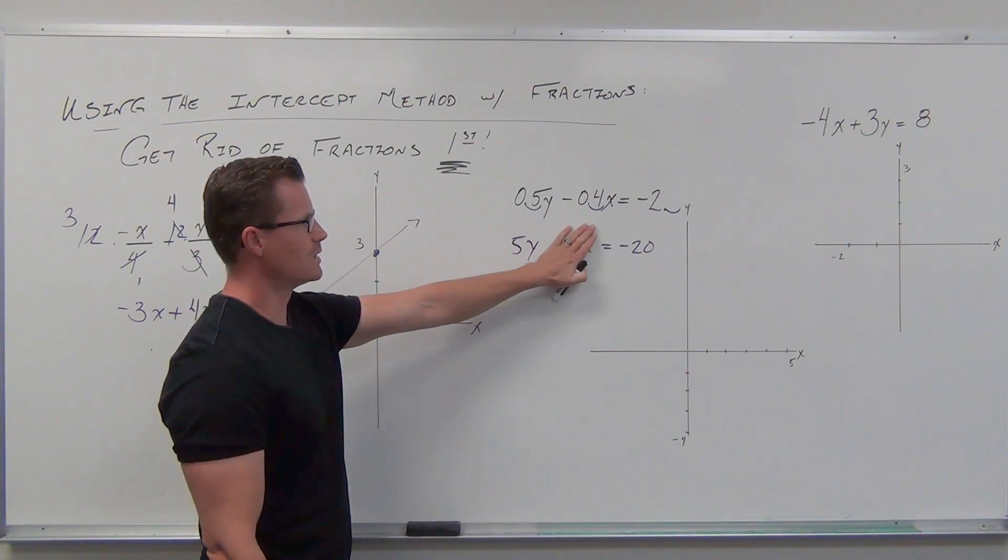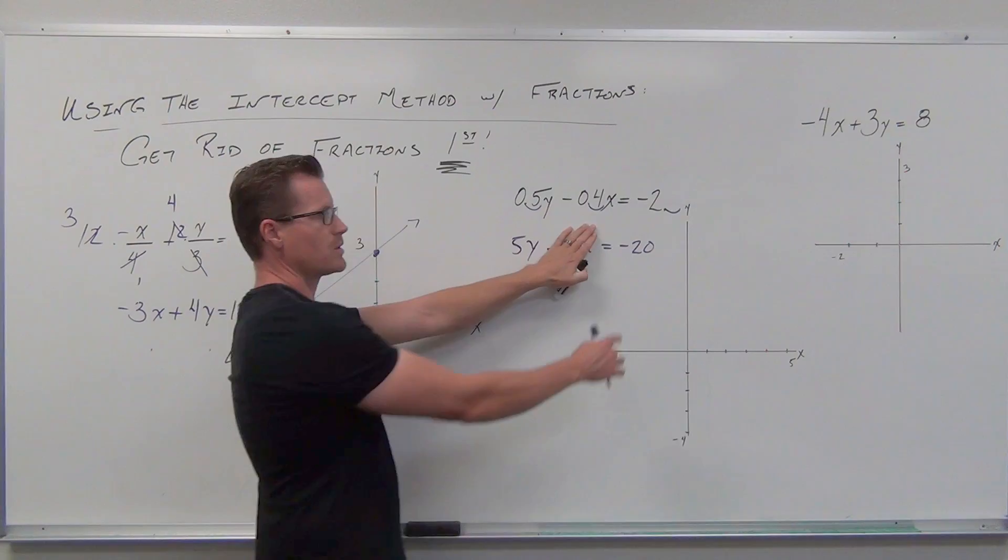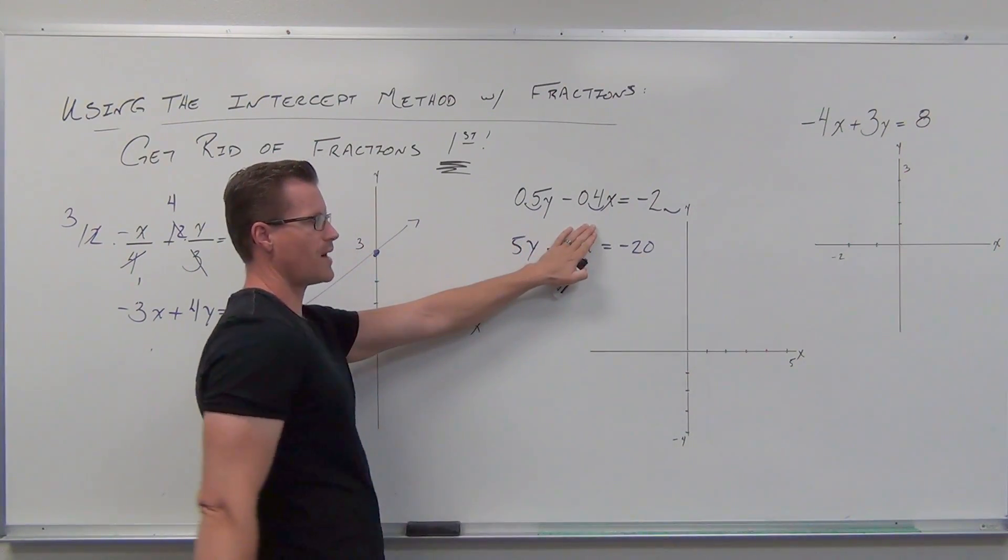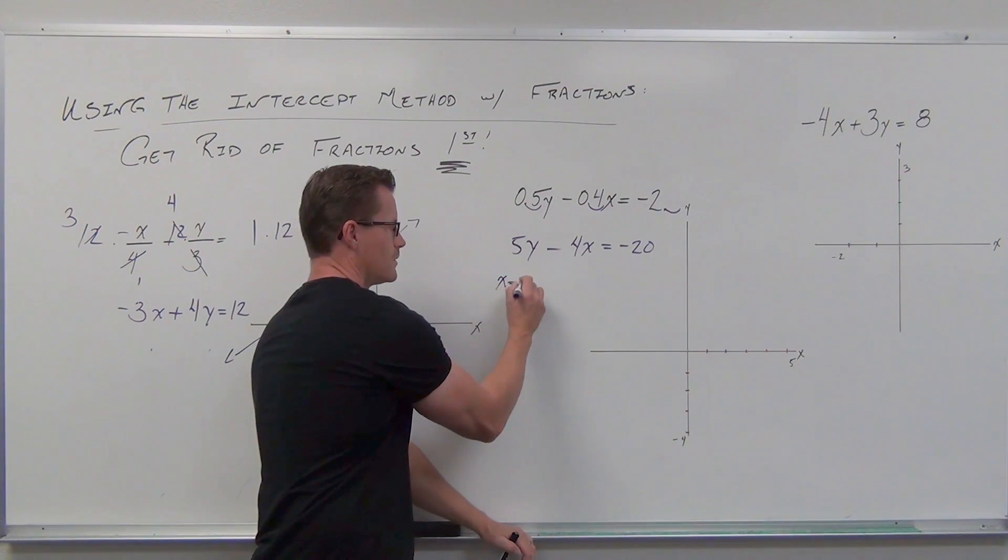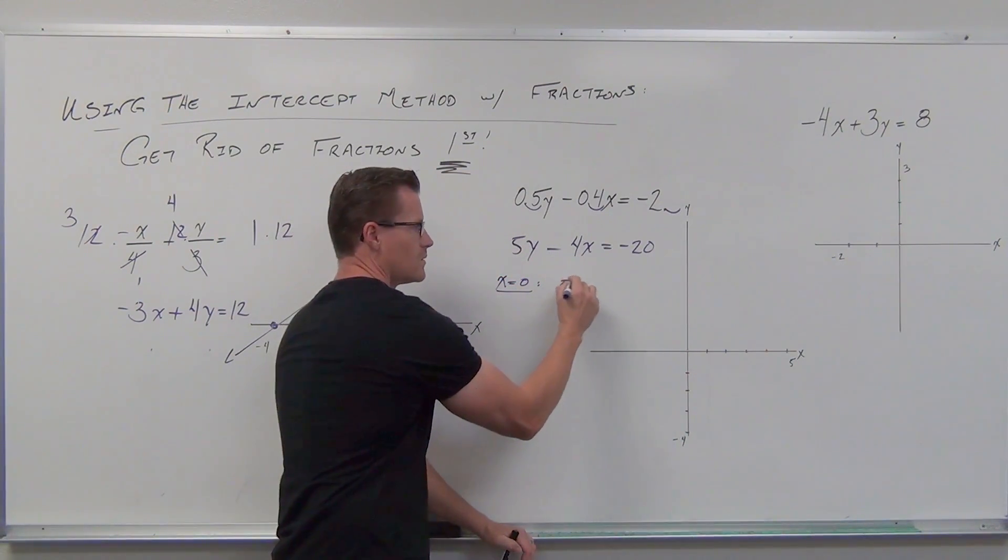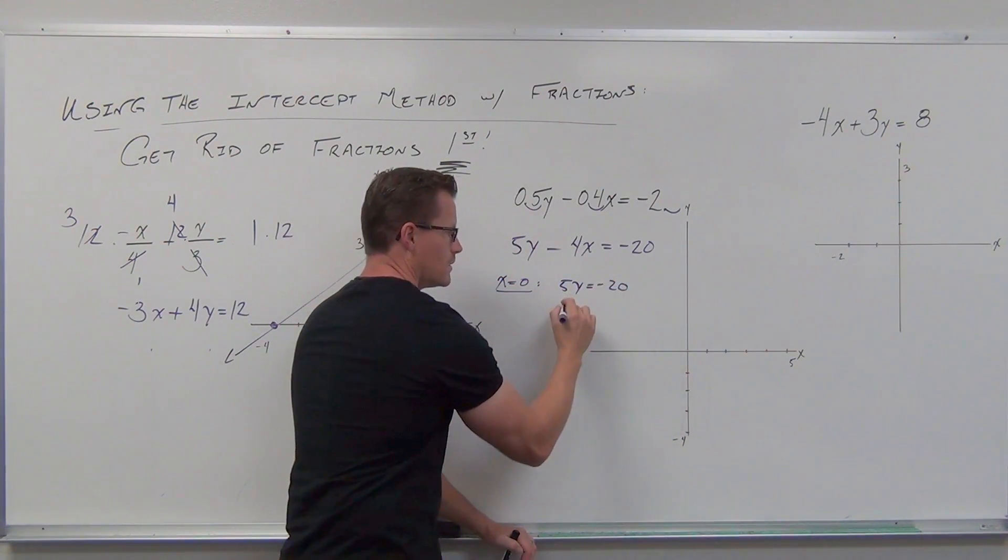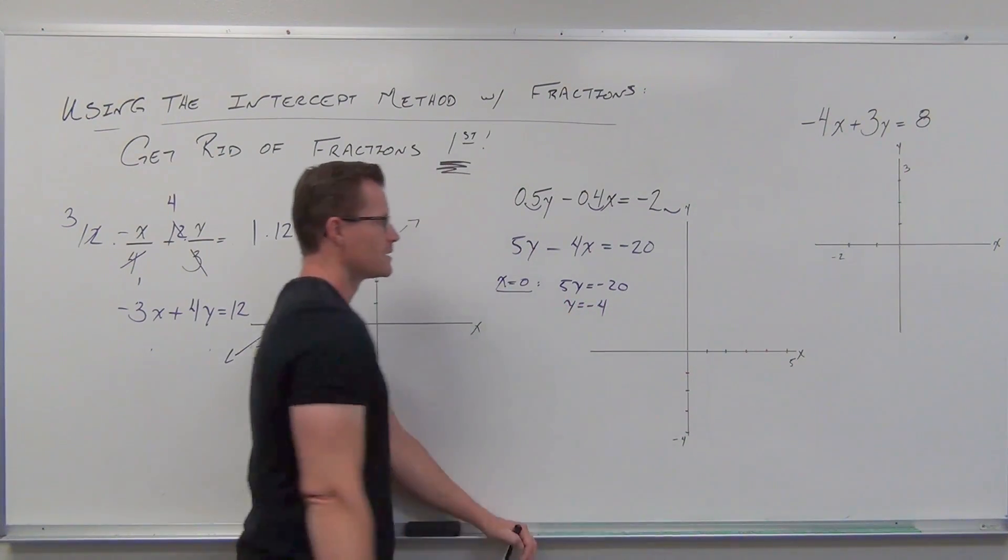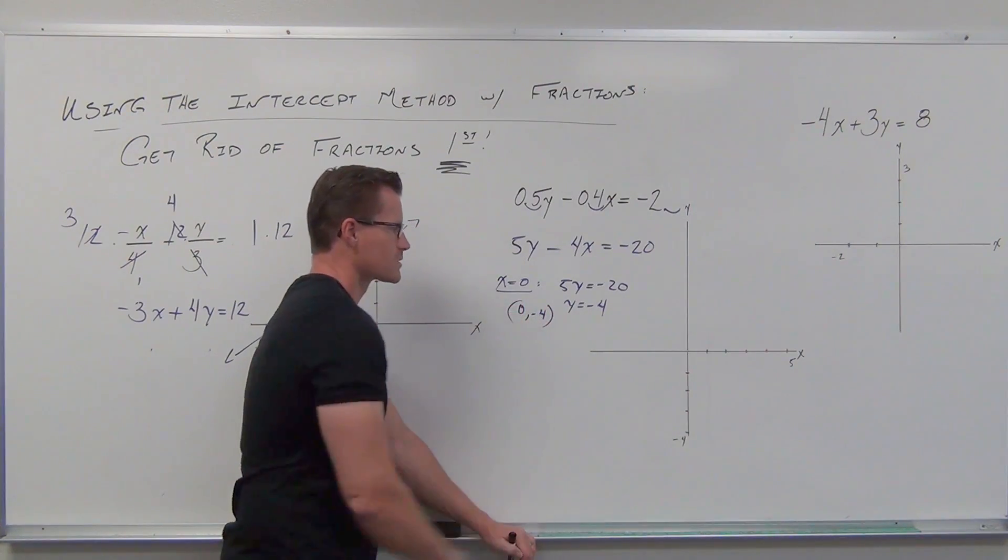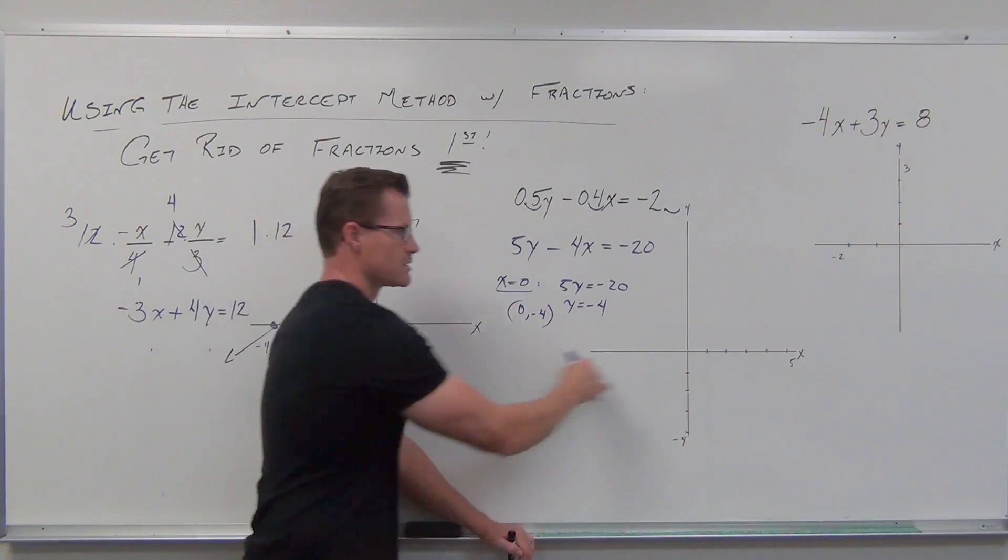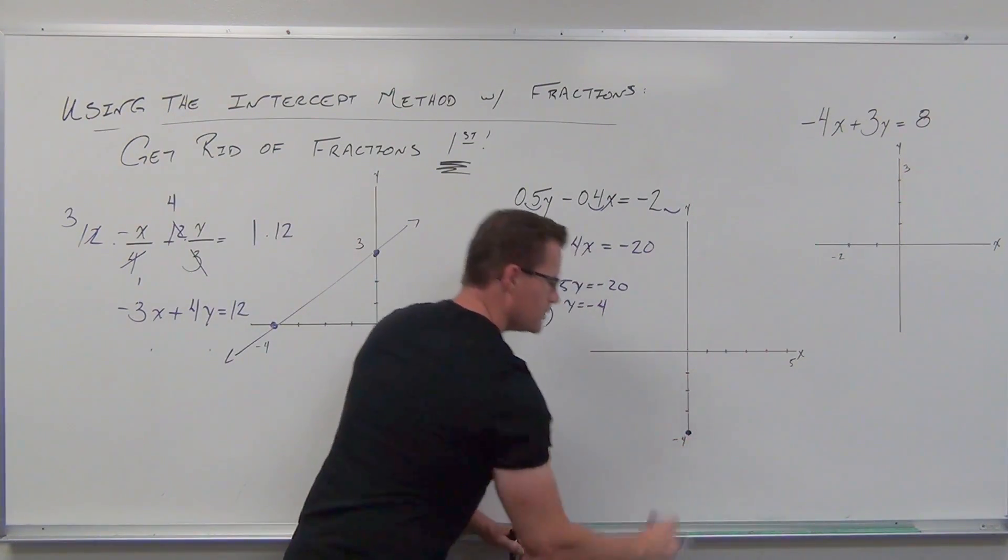Cover up your x if you want to. Divide by 5. Notice how negative 20 divided by 5 is negative 4. So we're getting x equals zero. This is the work that I want to see. Divide by 5, you get negative 4. That's zero, negative 4. That's what I mean by showing work. Zero, negative 4. That's your line intercept.